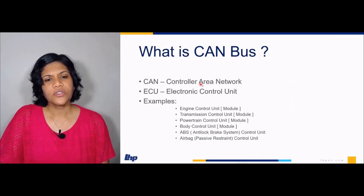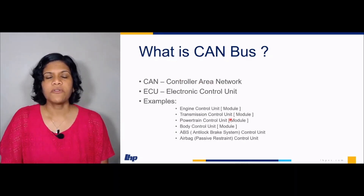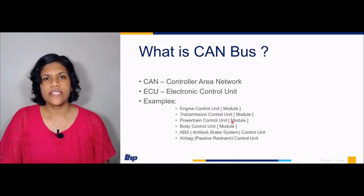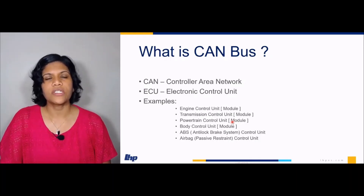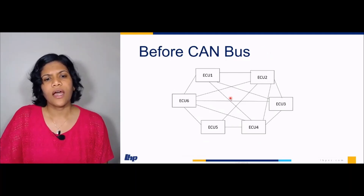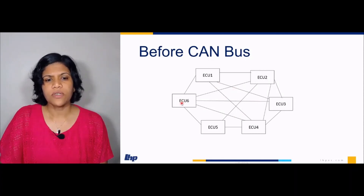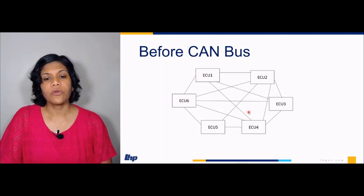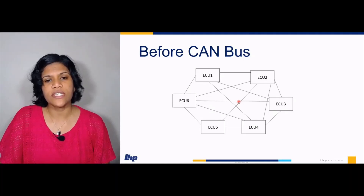CAN stands for Controller Area Network. Before talking about CAN, I want to explain what ECUs are. ECUs are electronic control units — for example, engine control unit, brake control unit, airbags — these are all electronic control units. In modern day cars, there are more than 70 ECUs. For proper functioning of the system, each ECU should communicate with every other ECU. Now imagine how complex these connections will be with more than 70 ECUs and how heavy it will be on your vehicle.